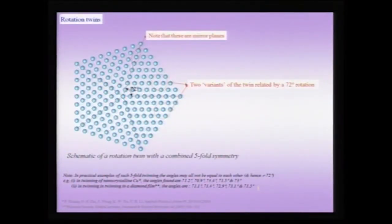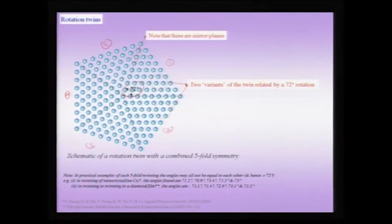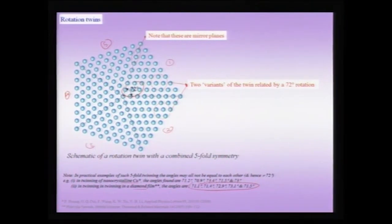Twins can also be created by other symmetry operations like rotation. In this rotation twin we have five variants. If you think of a rotation axis passing through the center of this figure, one crystal is rotated with respect to the other by approximately 72 degrees. In real crystals — studies have been done on nanocrystalline copper or twinning in diamond films — the angle is close to 72 degrees, but rarely exactly at 72 degrees. This rotation is carried forward five times to create the five variants of the crystal.